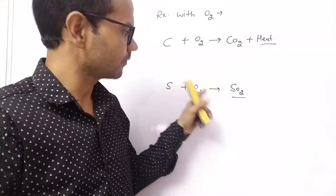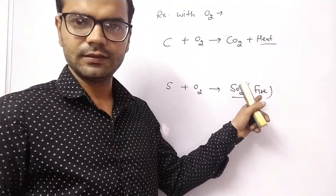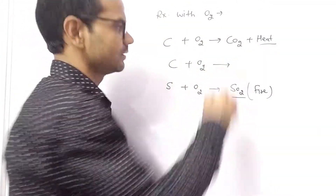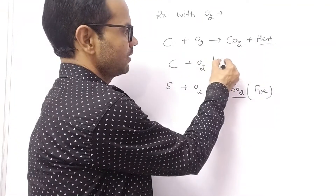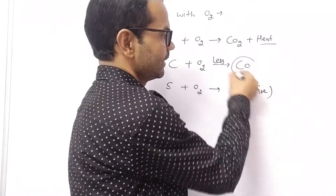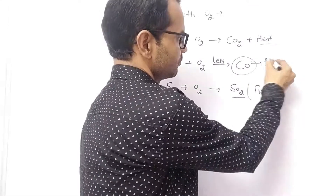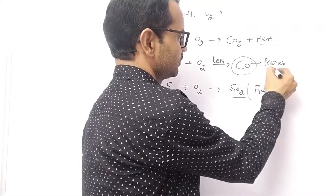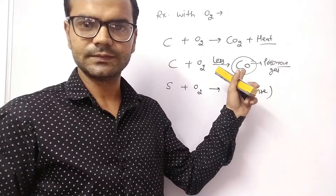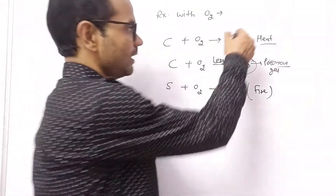Sulfur catches fire when exposed to air. If we supply oxygen in a lesser amount — meaning there is an insufficient supply of oxygen — instead of carbon dioxide, carbon monoxide is formed. Carbon monoxide is a poisonous gas. These oxides are acidic in nature.